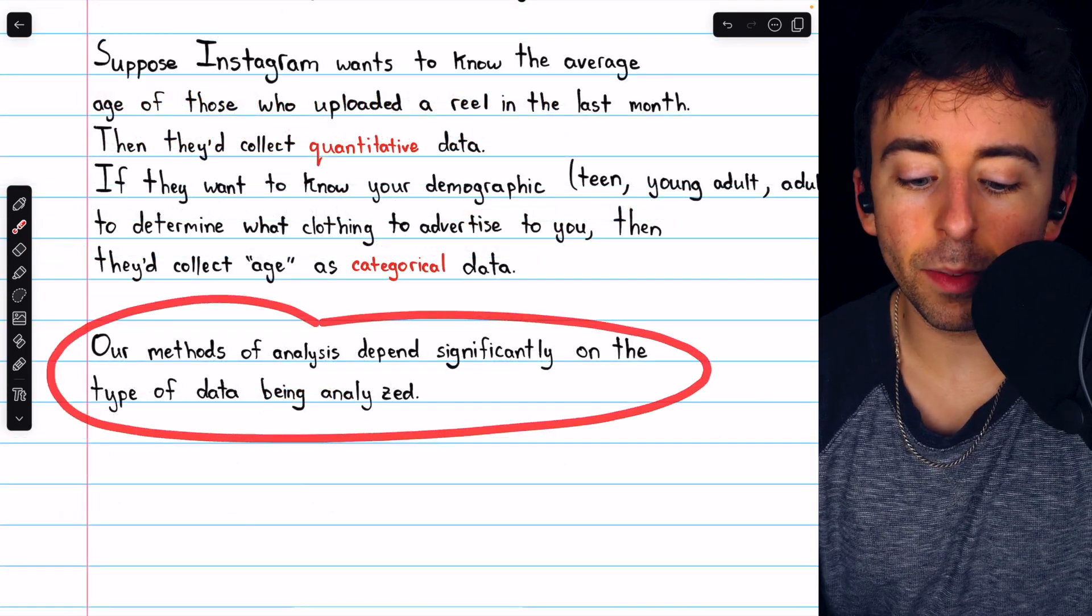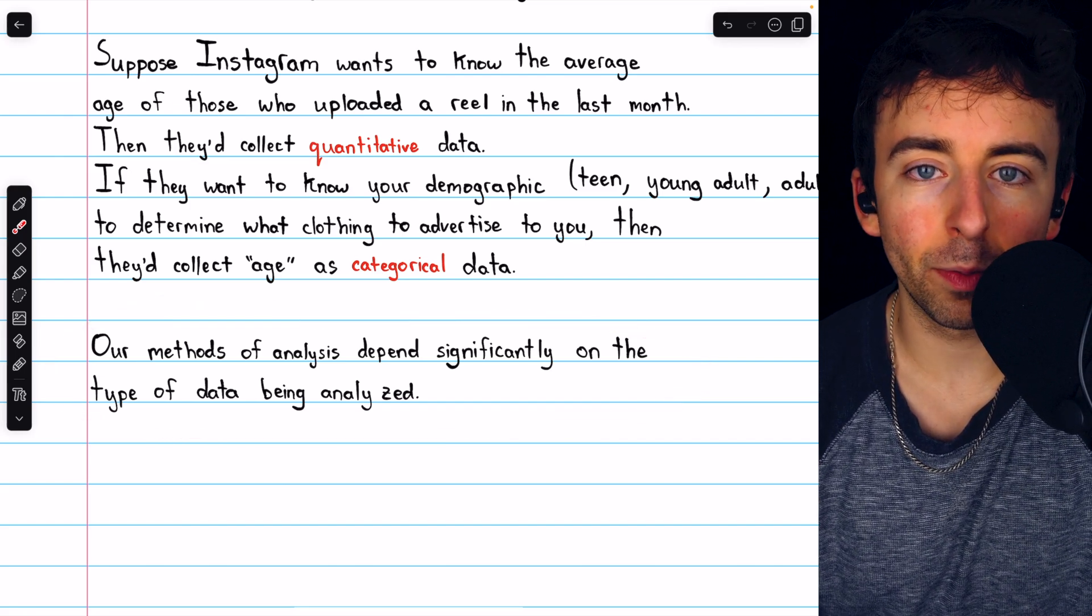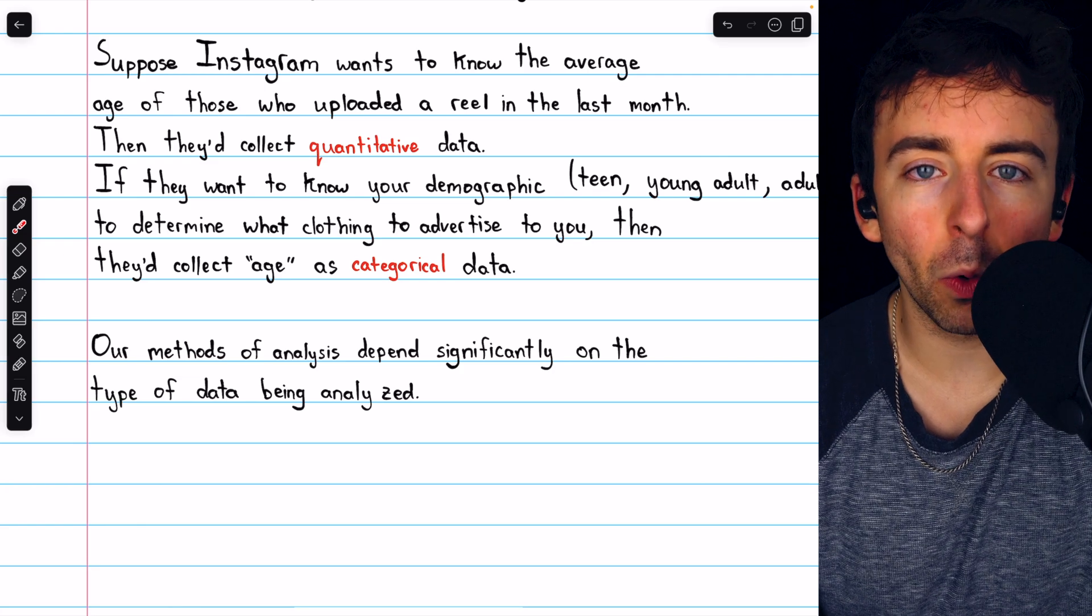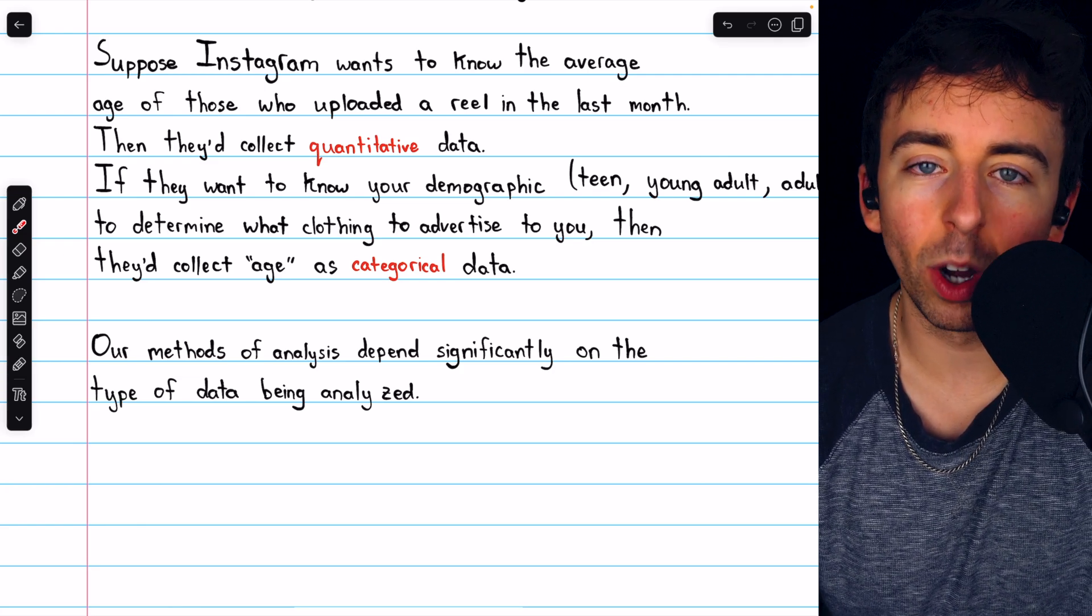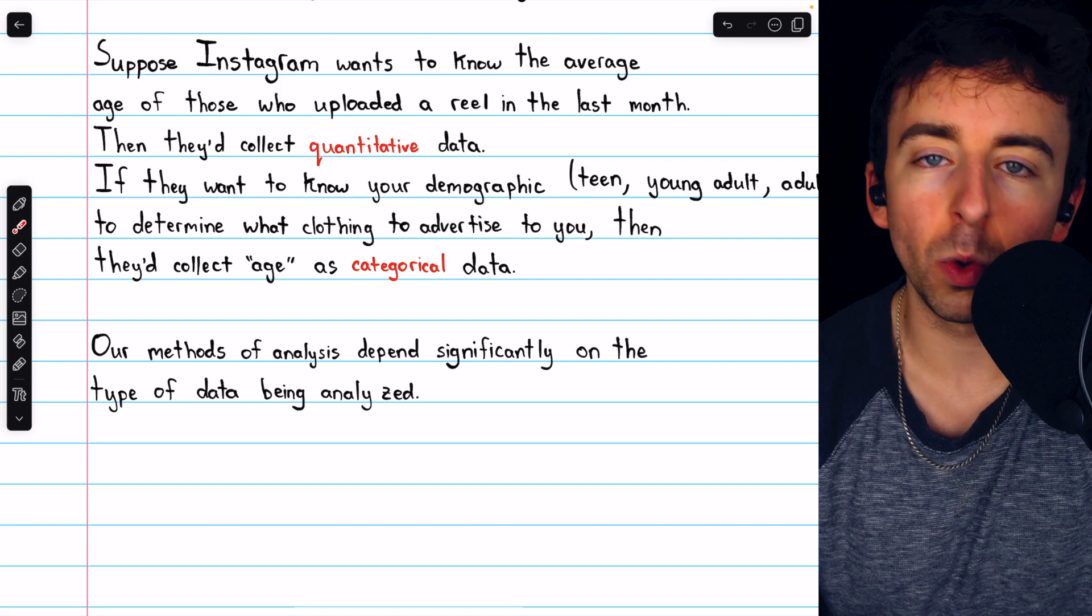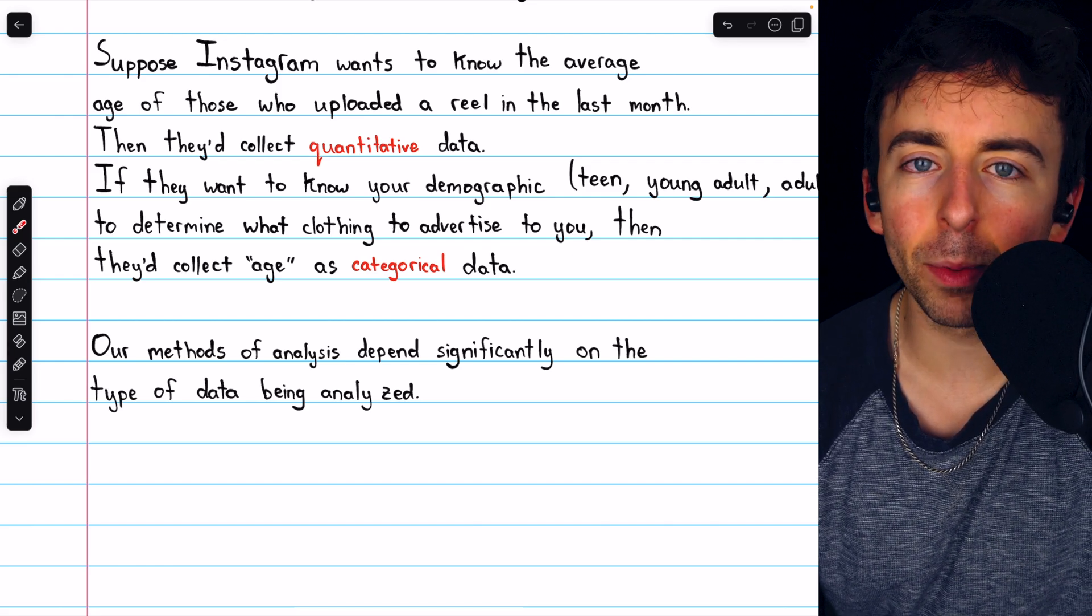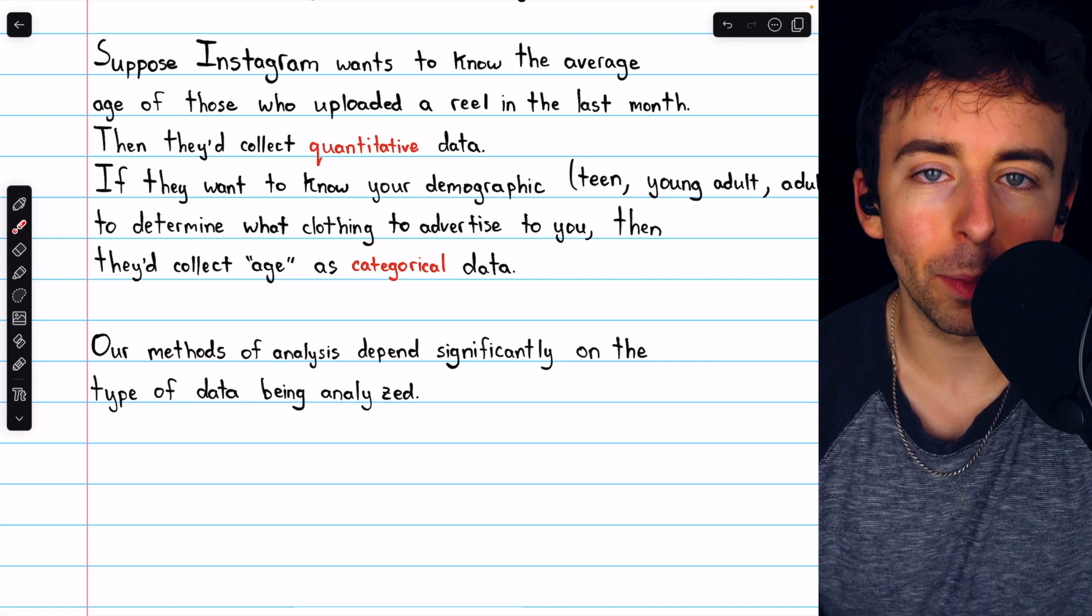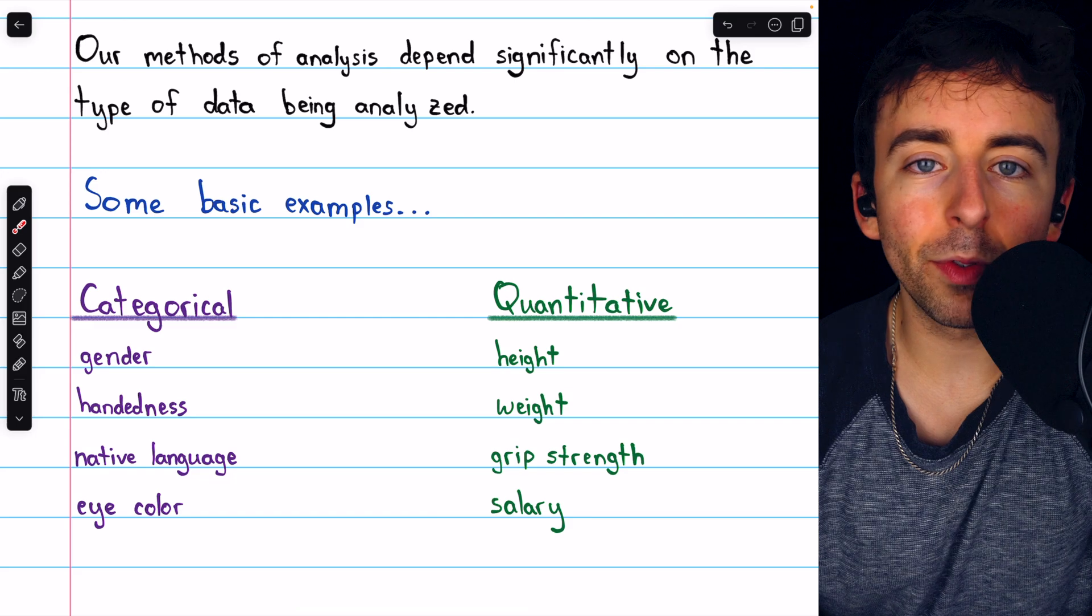Again, our methods of analysis depend significantly on the type of data being analyzed. So if we were going to collect data, we would need to think about why are we collecting this data and what's the best way to collect it? What should the variables be? How should we be measuring them? For example, should we collect age as an exact number? Or should we just get rough demographic information? Which would be more useful?